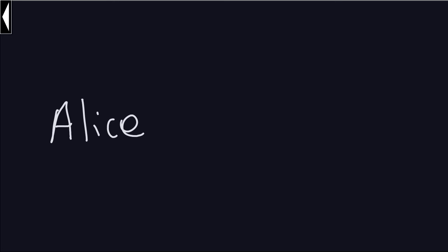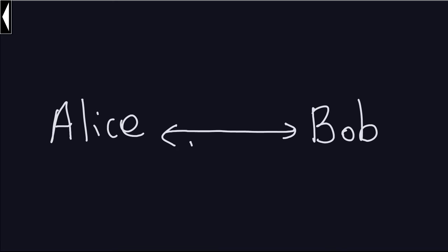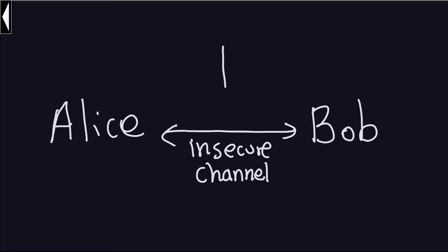Before I give you an example about the Caesar Cipher, let's recall a couple of things that are important. There are a couple of people who want to communicate: one of them is called Alice, another person Bob, and they want to communicate through an insecure channel — for example, the internet. We always assume that there's another person listening to these messages all the time, and we're going to call this person Eve.